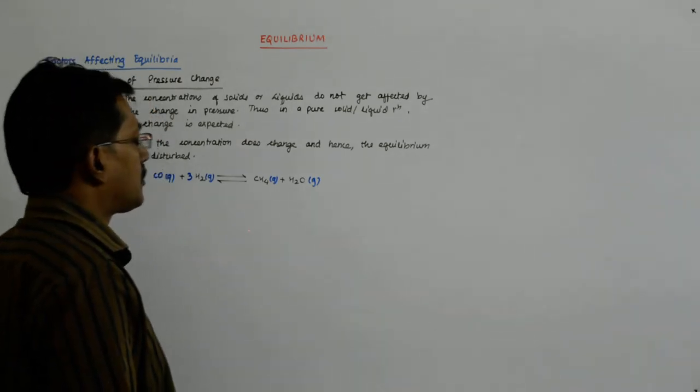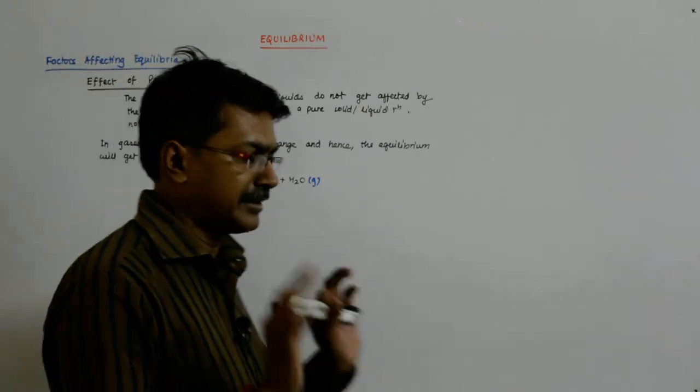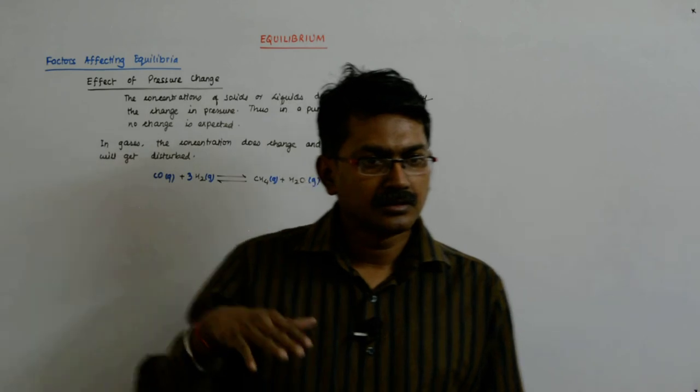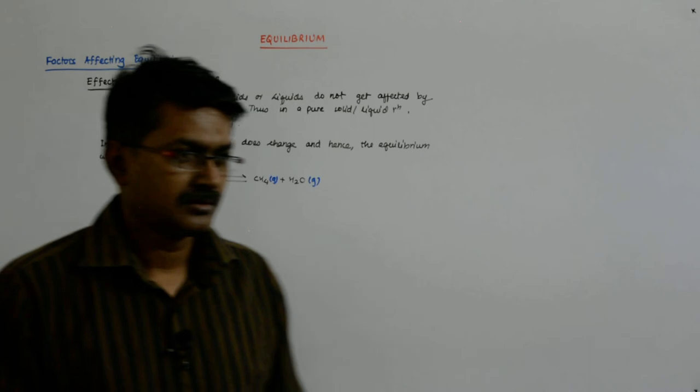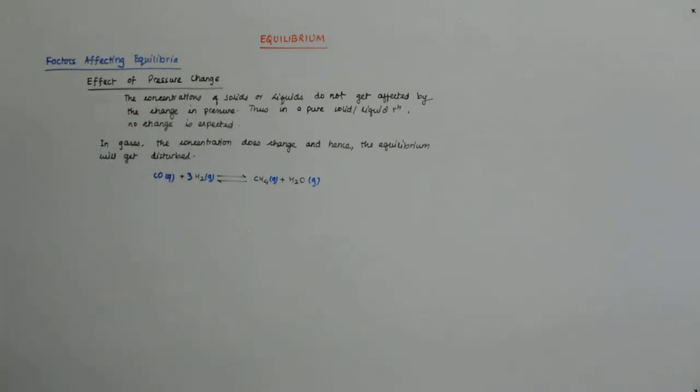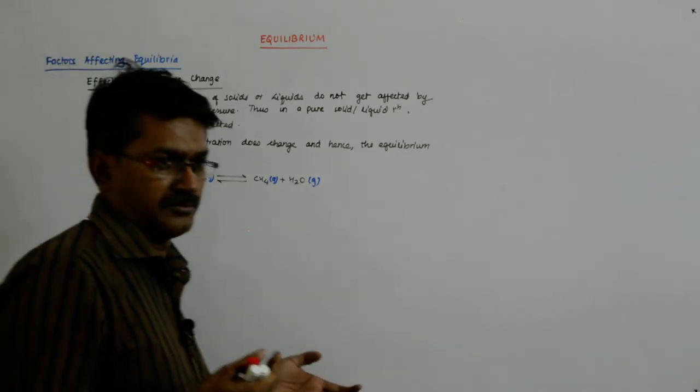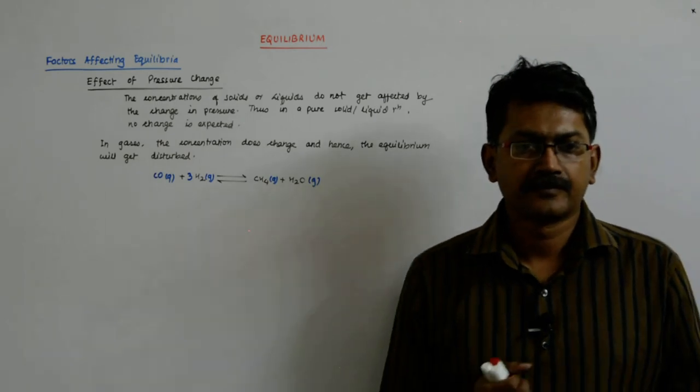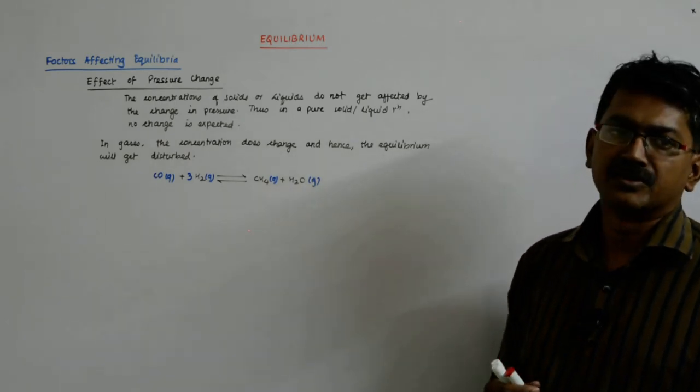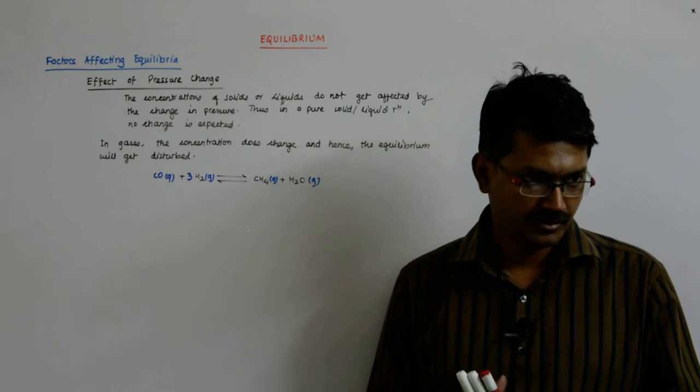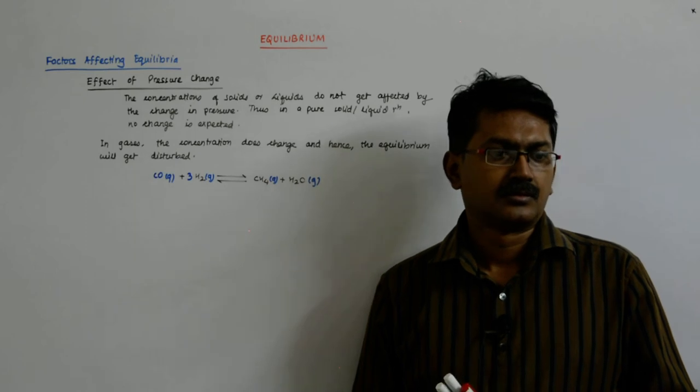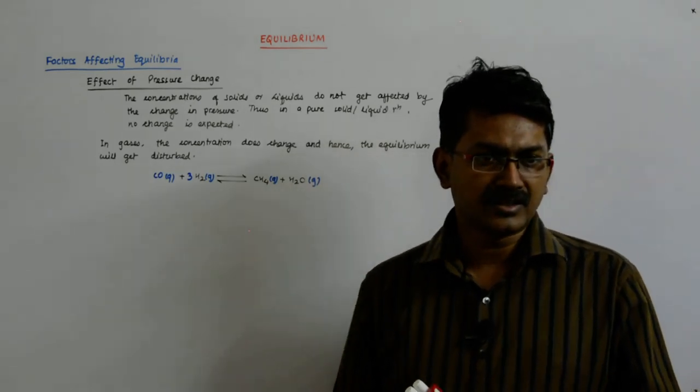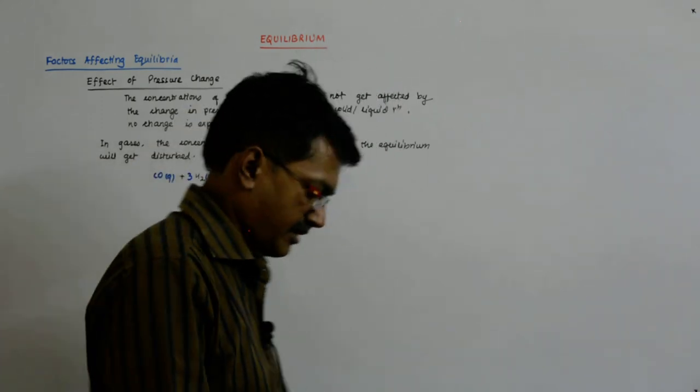Now you have this thing in a cylinder with a movable piston, and you suddenly compress the piston. The pressure goes up. Now what happens? The pressure has to be reduced. How does it reduce the pressure? Decreasing the volume? No, you have already compressed it. Try to understand.